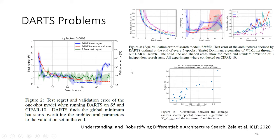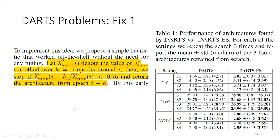A fix they proposed is early stopping — a very nice simple fix. Keep track of lambda-max, the max eigenvalue of your Hessian of the alpha values. As soon as they start going up sharply, just stop and return the architecture from a few epochs before it started going up sharply. Various other fixes are also coming around, like normalizing across nodes to make sure gradients of certain parameters don't dominate because their gradient norms are higher.